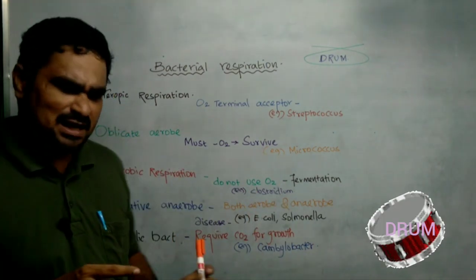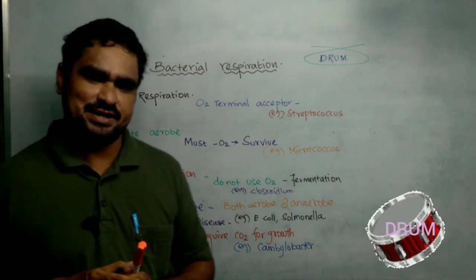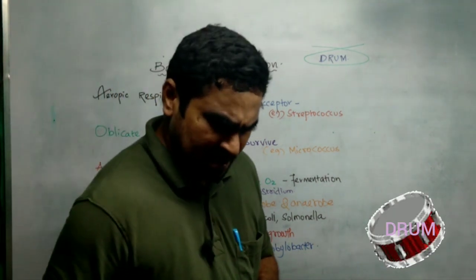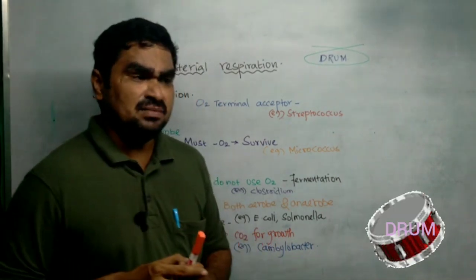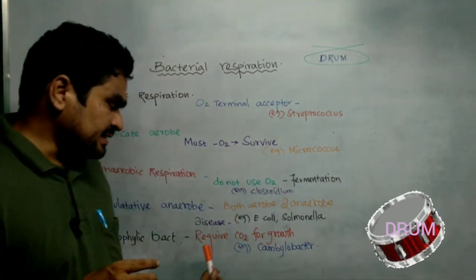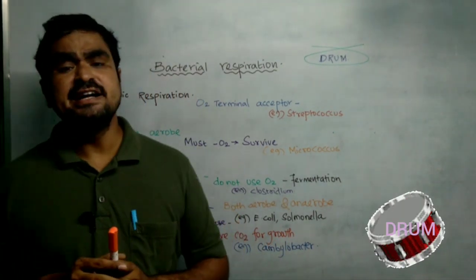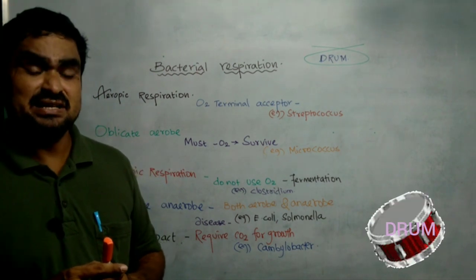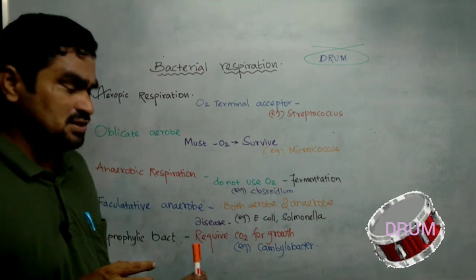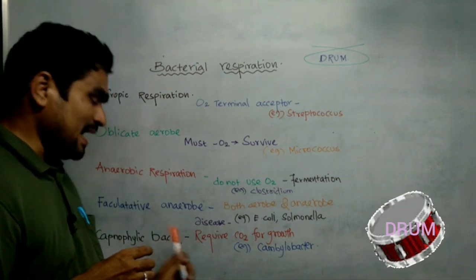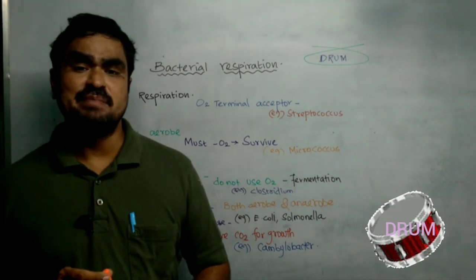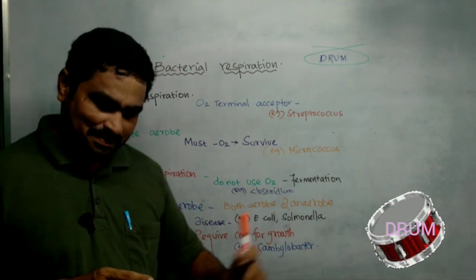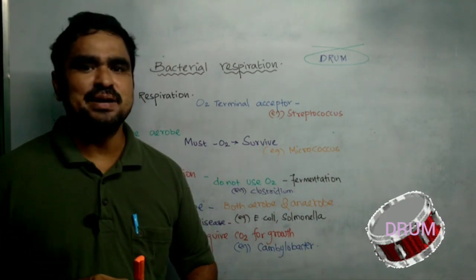The final type is capnophilic bacteria. What is capnophilic? In capnophilic bacteria, carbon dioxide is required for their growth. Carbon dioxide is necessary for the survival of this type of bacterium, and so they are called capnophilic bacteria. An example is Campylobacter.